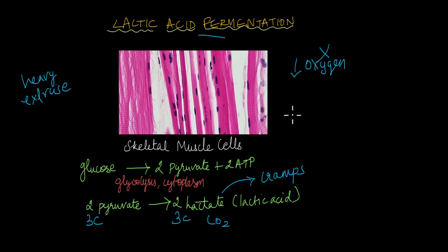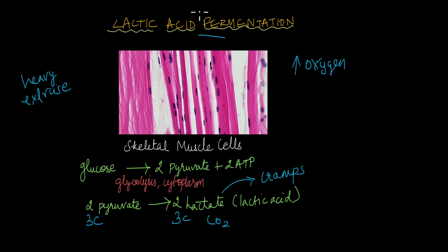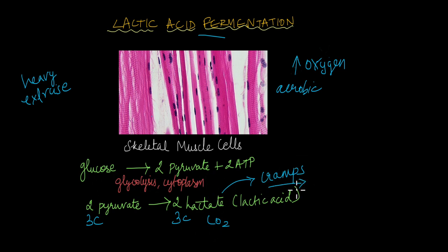Later, when we stop exercising and begin to breathe normally, the amount of oxygen in the body starts to increase. As oxygen concentration increases within the cells, skeletal muscle cells begin to abandon lactic acid fermentation and continue with the normal aerobic mechanism of respiration. That is when the lactic acid is also broken down, which is why our cramps go away after some time.